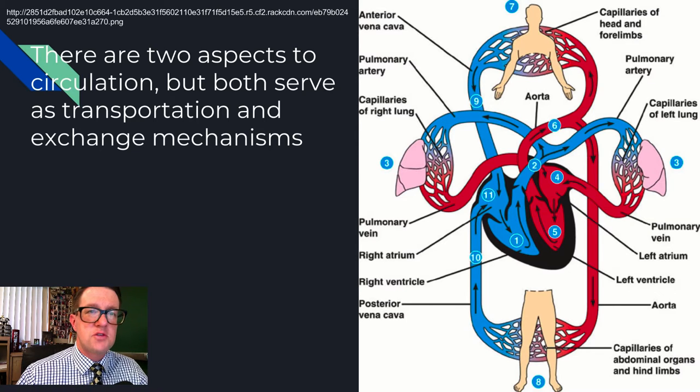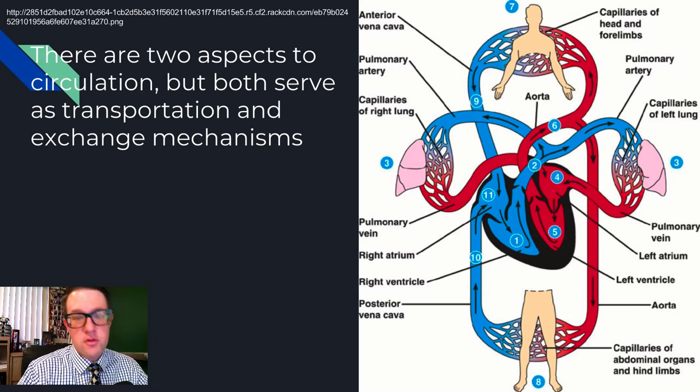What we end up doing is we have a divide and conquer approach, where one part of circulation will specialize in one thing, and the other aspect will specialize in something else. It's a division of labor that, for the most part, works rather well.